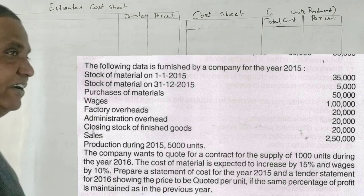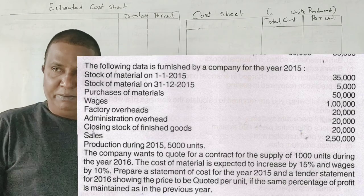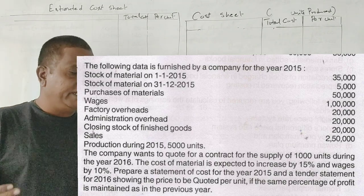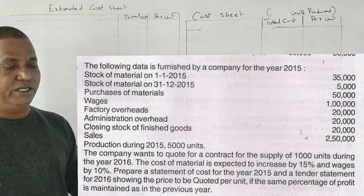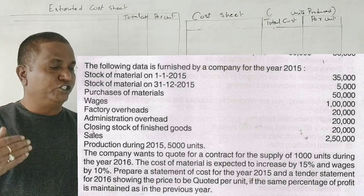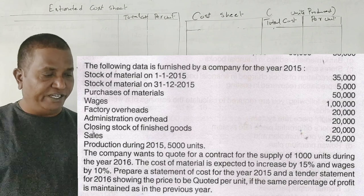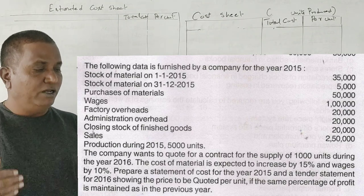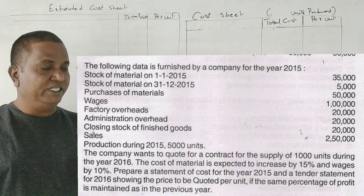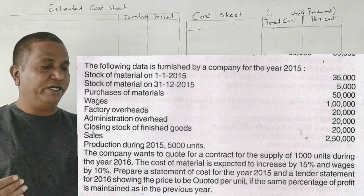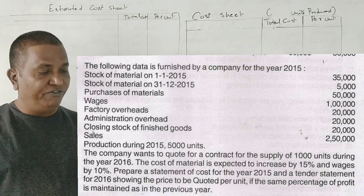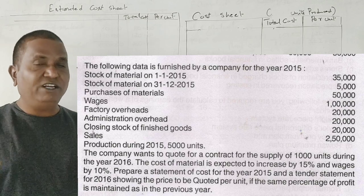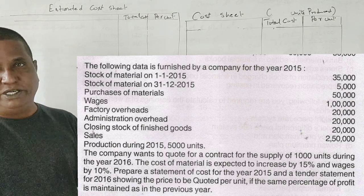This is a 2017 question paper. The following data is furnished by a company for the year 2015: stock of material on 1-1-15, stock of material on December 15, purchase of material, wages, factory overhead, administration overhead, closing stock of finished goods, sales, and production during 2015 — 5000 units.